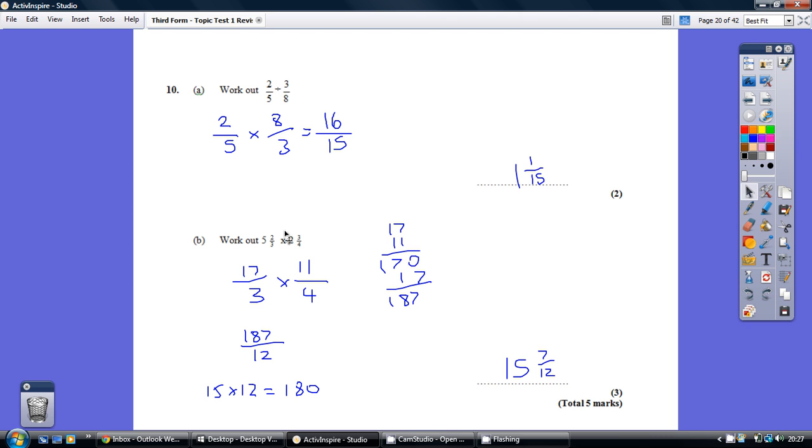Part B, as with anything with a mixed number, start off by turning it into a top heavy fraction. Timesing is just top, top, bottom, bottom. It's the easy one. That gives us 187 over 12, which simplifies down to 15, well not simplifies, it can be looked upon as being a mixed number of 15 and 7 twelfths.